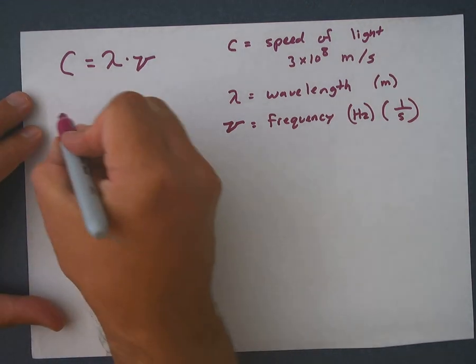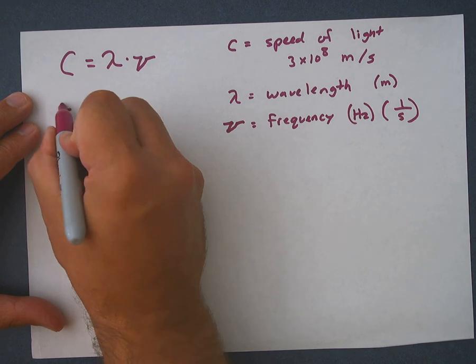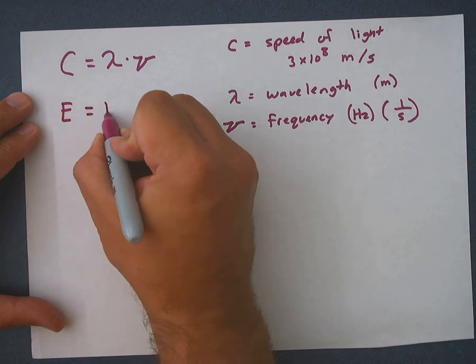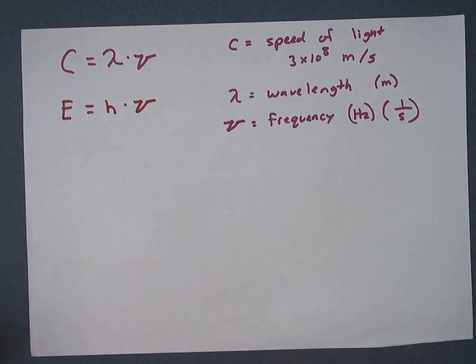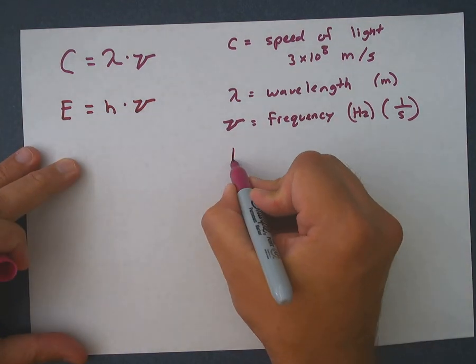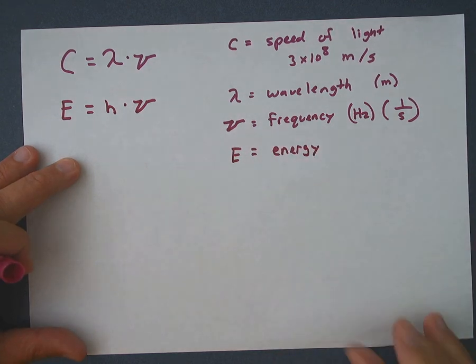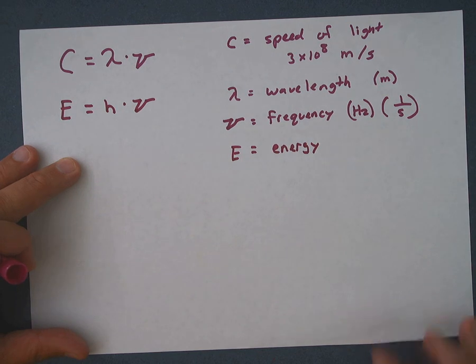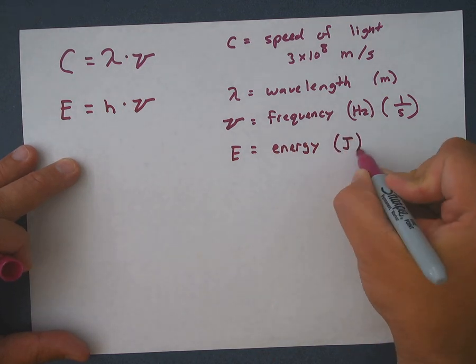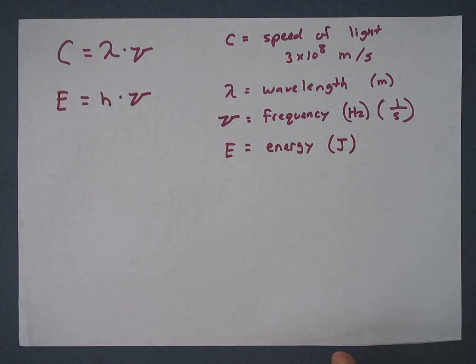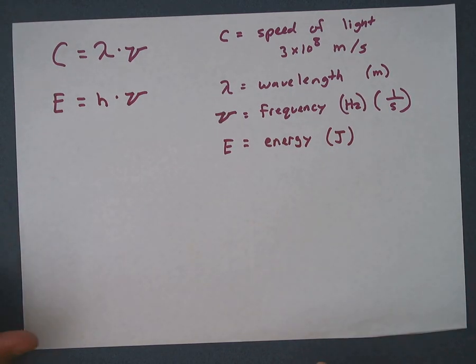The second formula we have is energy, E, equals h times nu. So we have a couple new formulas. E stands for energy. Sometimes it's a change of energy. But it's energy. And the units that we're going to use for this is joules. Joules is complicated. It means kilograms over seconds squared, meters. This kind of gets complicated, right? But you can be okay with just using joules.